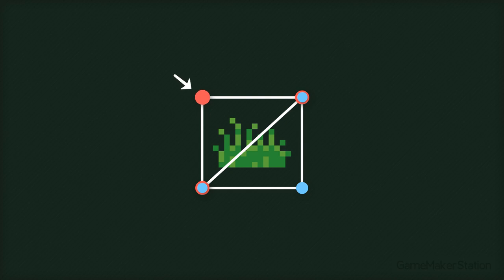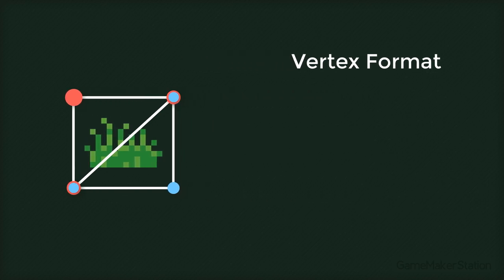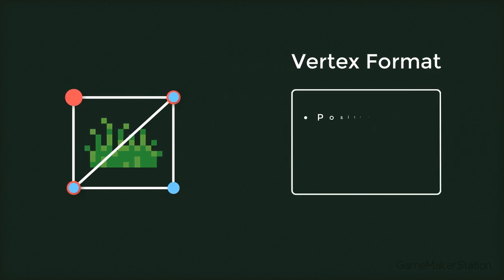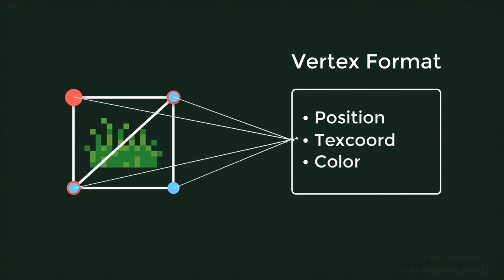Now let's take a look at one single vertex. For each vertex, you'll need to pass in some data. The data required will be set up with your vertex format. Our vertex format will require position, texture coordinates, and color.